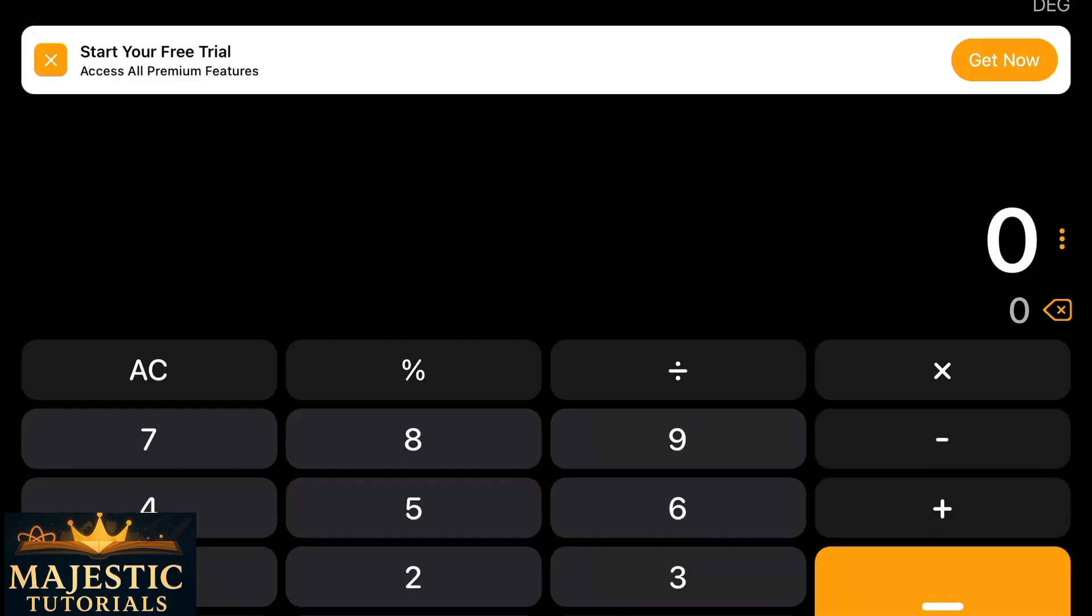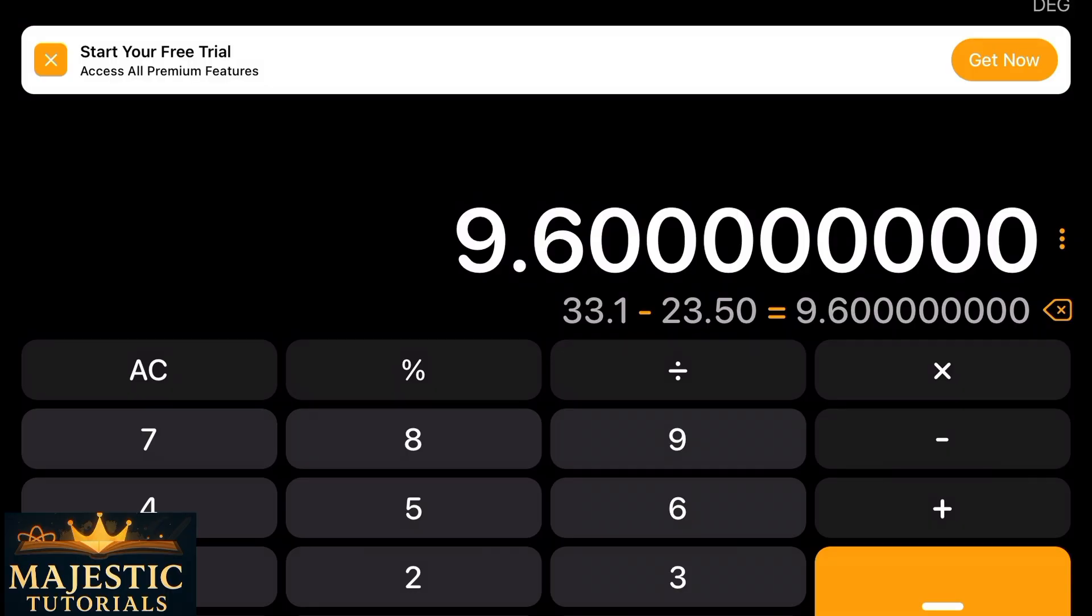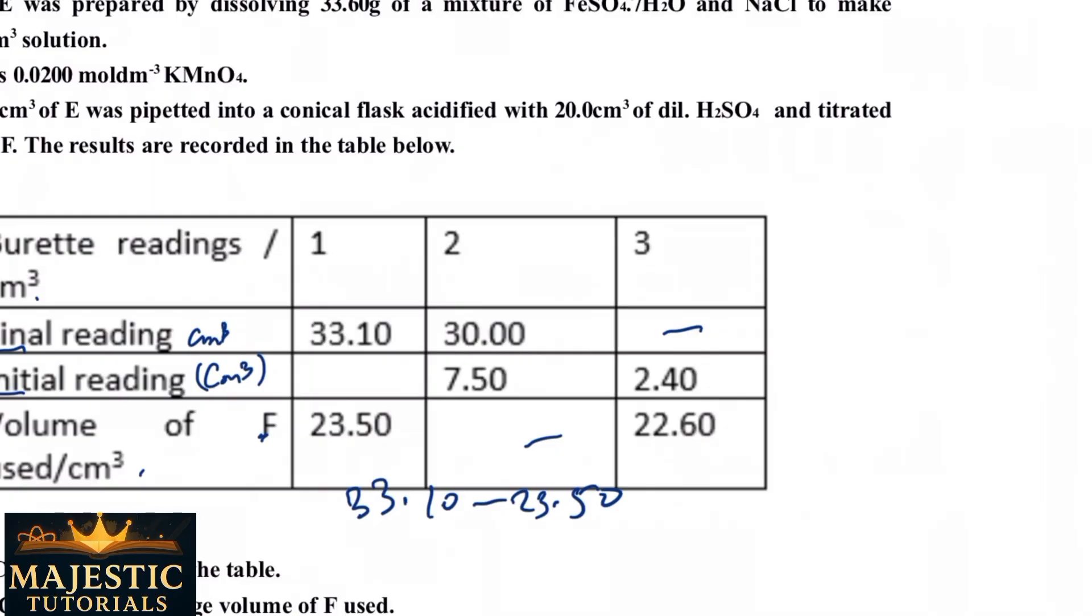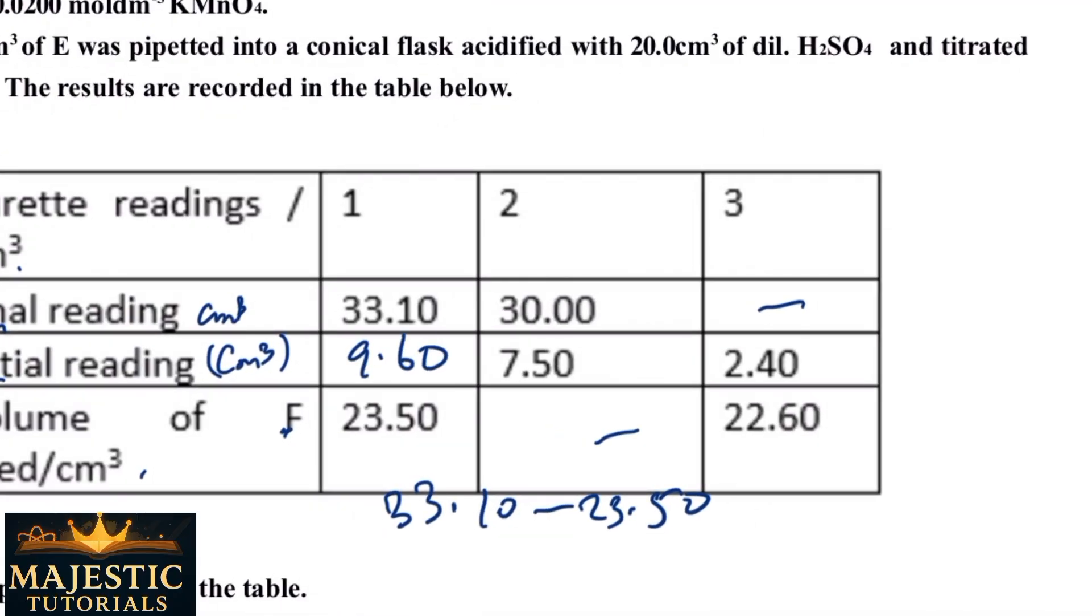I guess this is giving us 9.60, so we go back - 9.60. So I was correct. Remember to write this 0. Don't just write 9.6, you will lose marks. Keep it in two decimal places and three significant figures. Possibly when you want to get your concentration, you follow the same pattern. The idea here is that to get this volume of F used, you have to minus final burette reading from the initial, which is 9.6.